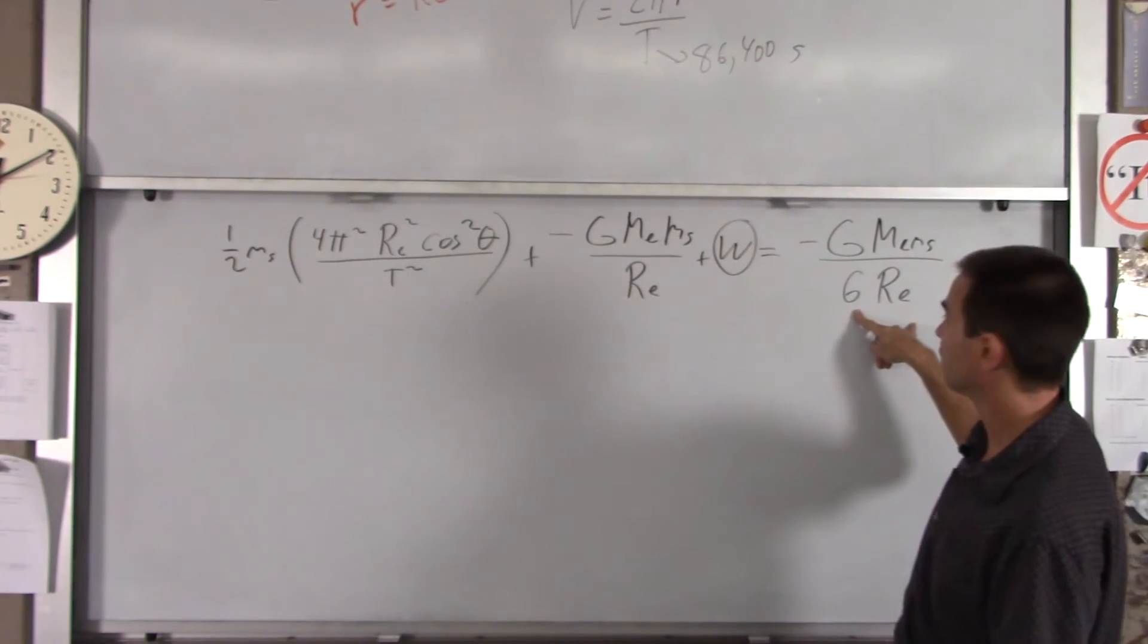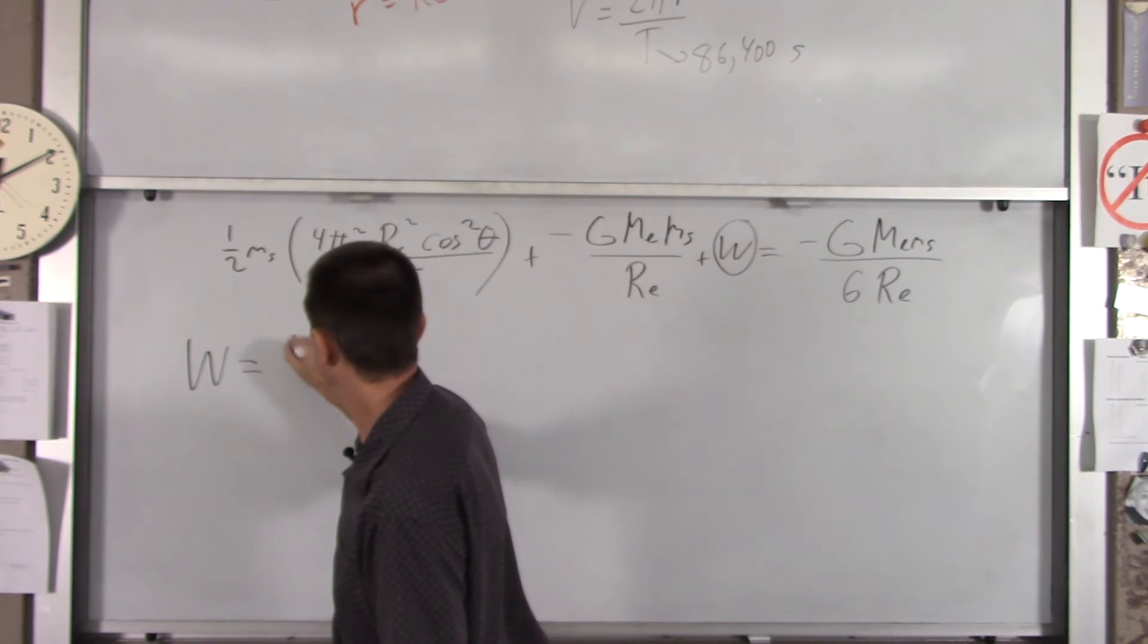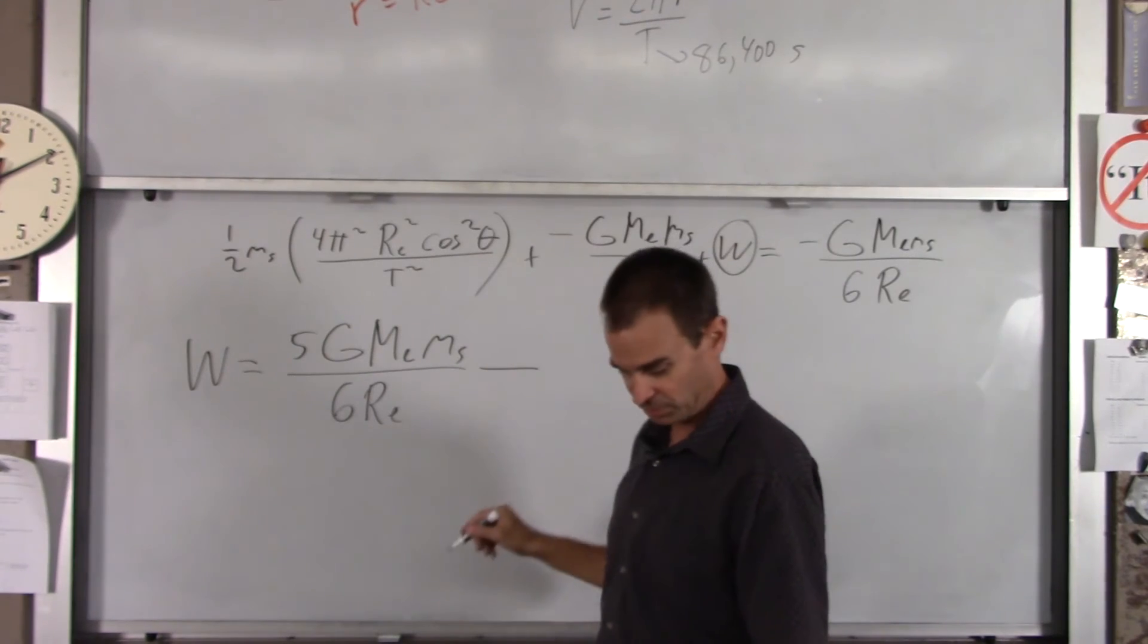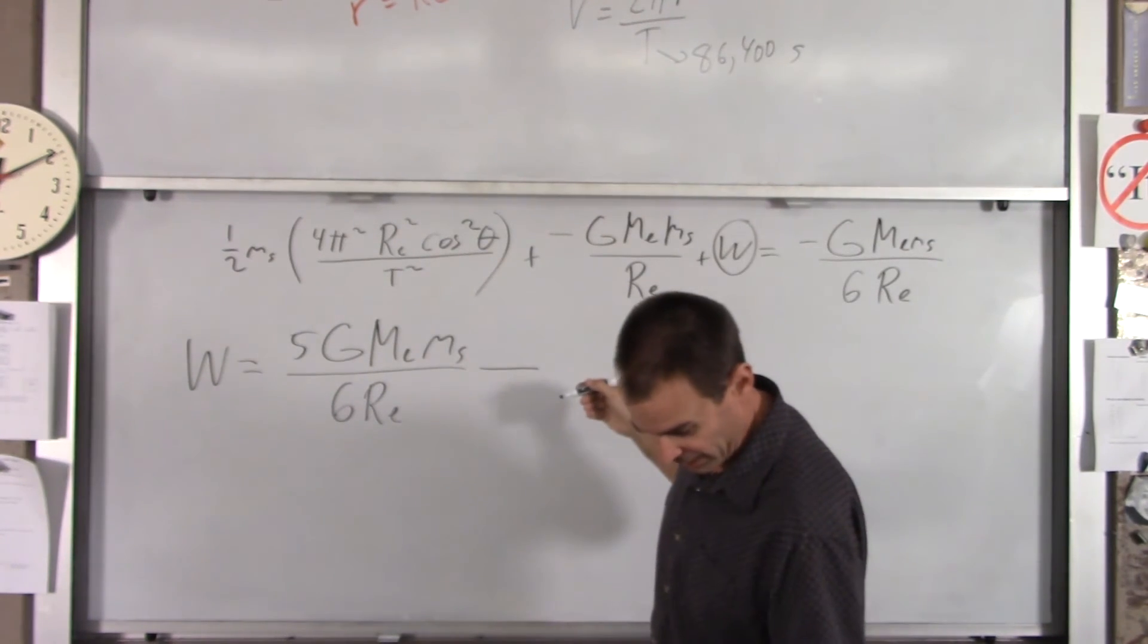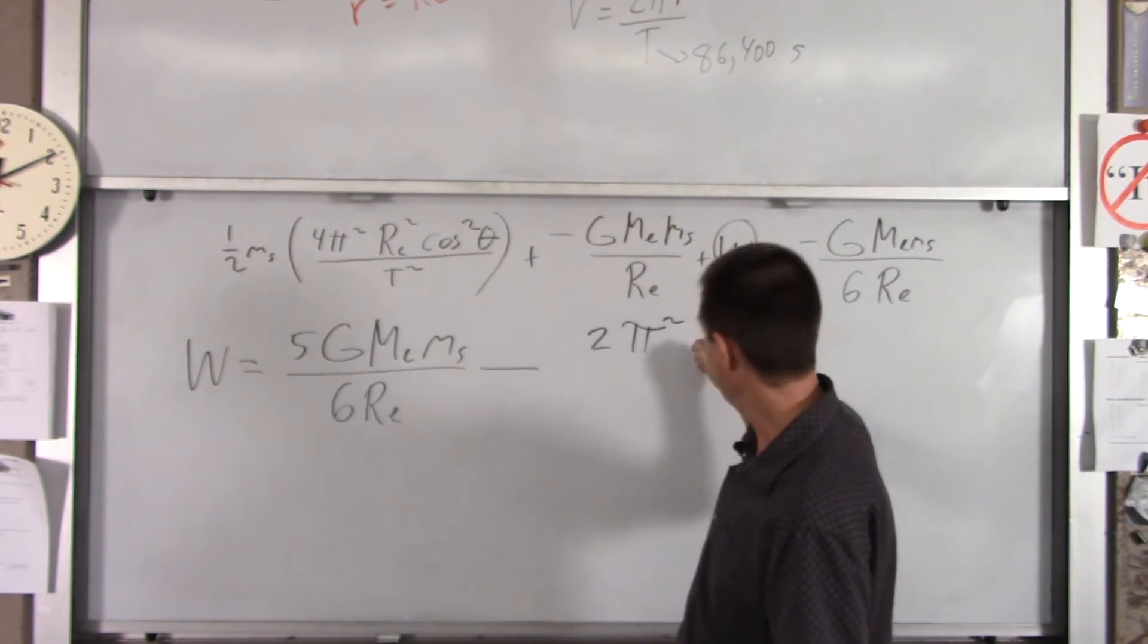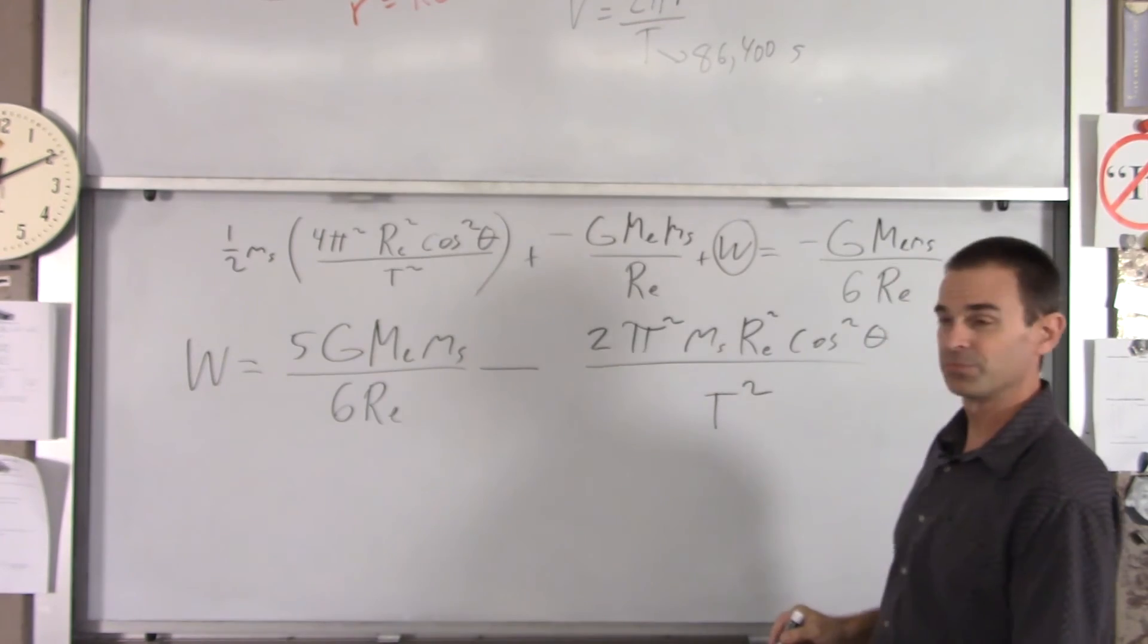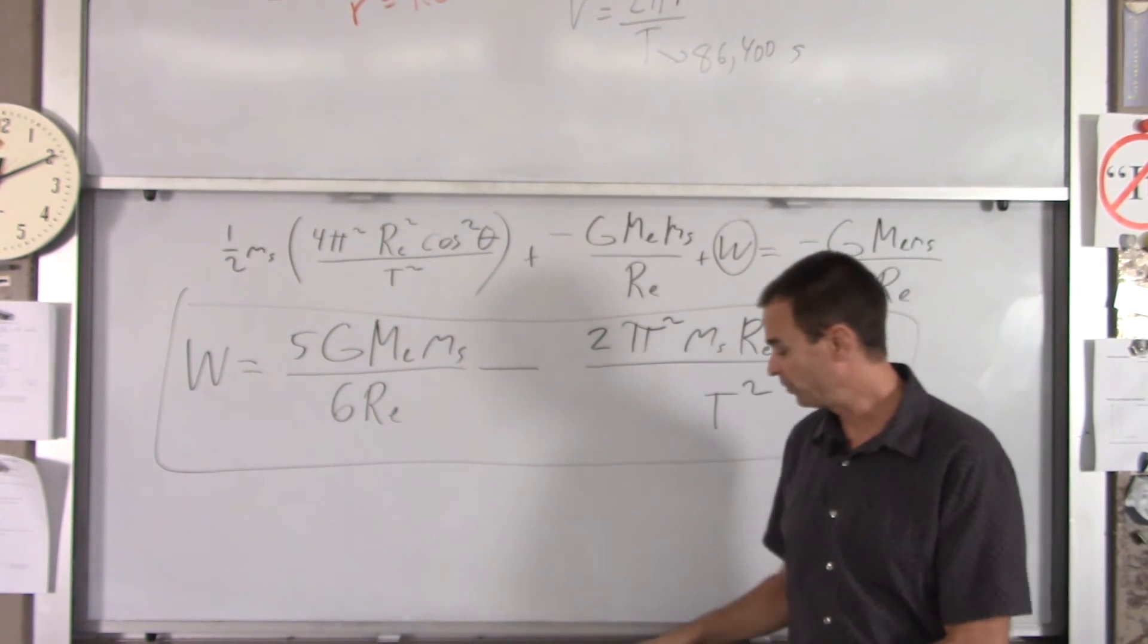If I take this and add it over here, that's 6 over 6 minus 1 over 6, you get 5 over 6. So w equals 5, big G, mass of the Earth, mass of the ship over 6 Re. Minus this term here. If you move this over to there, it becomes negative. I will do a little bit of simplifying down there. The half and the 4 become a 2. You got your pi squared. You got the mass of the ship, Re squared, cosine squared of your latitude over t squared. So that is the amount of work necessary to launch the ship from a latitude to a circular orbit, some height above the Earth's surface.